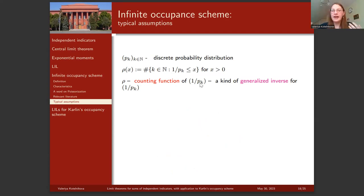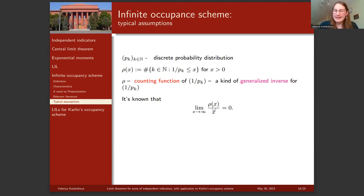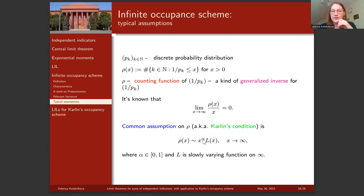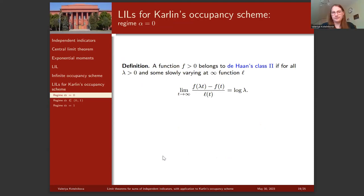We denote by {p_k} the discrete probability distribution and work with a counting function ρ(x) = Σ_{p_k ≥ 1/x} 1, which captures all properties of the distribution. As x → ∞, ρ(x) → ∞. Karlin's assumption states that ρ(x) behaves like x^α times a slowly varying function at infinity, with 0 ≤ α ≤ 1. We prove our law of iterated logarithm for these values of α.